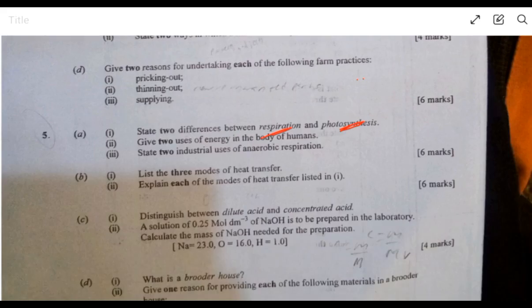Question five. Respiration takes place in the mitochondria while photosynthesis takes place in the chloroplast of green plants. Respiration helps to break down glucose to release energy, while photosynthesis converts light energy to chemical energy for glucose to be produced. Two uses of energy in humans: humans use energy to do work and it helps in metabolic activities in the body. The body is able to generate heat. State two industrial uses of anaerobic respiration: it's used in the making of yogurt and in the making of beer or alcohol.